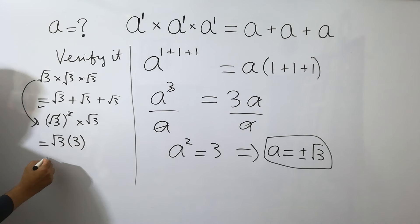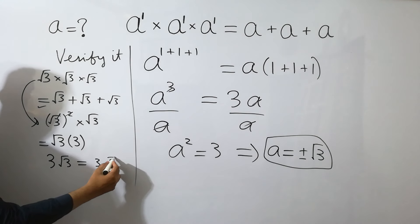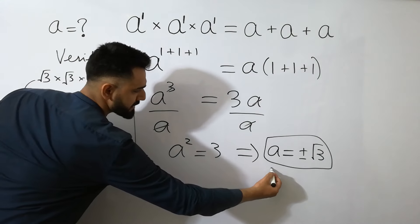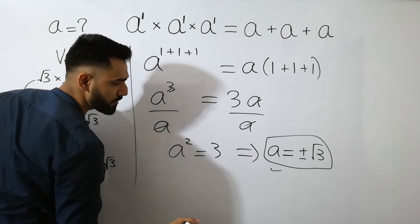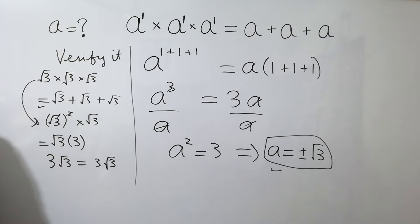We will get 3 square root of 3 is equal to 3 square root of 3. So A has values of square root of 3 and minus square root of 3. Okay, bye.